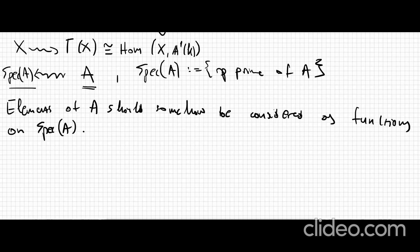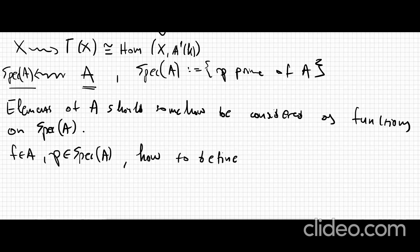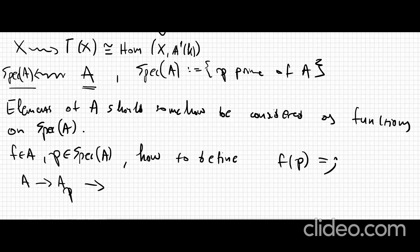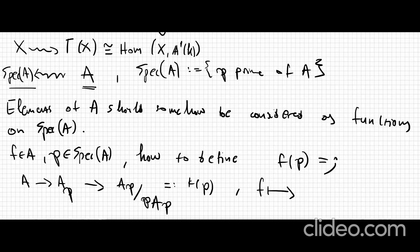Strictly speaking, we can't really do this. But what we can do is the following: if f is an element in A and p is a prime ideal of A, we ask how to define f(p). What we do is take the ring A, localize at p — since p is a prime ideal, this gives a local ring with unique maximal ideal p·A_p. We then map to the residue field, sometimes denoted k(p). We take an element f and map it through this composition, which gives f/1 modulo the maximal ideal.